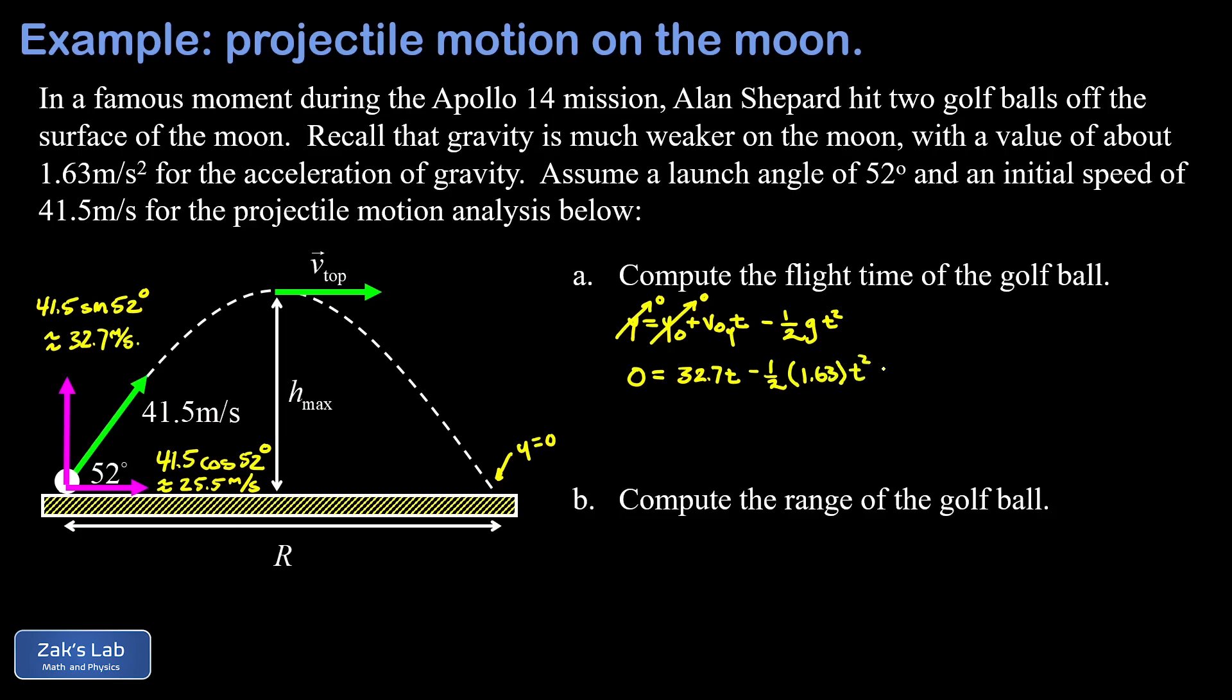Now one solution of this quadratic equation is t equals zero. We can see that by inspection, because if I sub in t equals zero, it makes the equation true. This solution is valid because the math just told us at t equals zero, y is equal to zero. It's just that we're not interested in that particular solution. We want to know the other time where y is equal to zero.